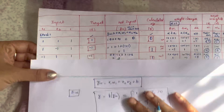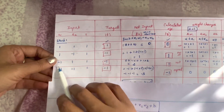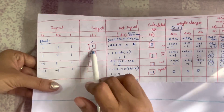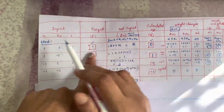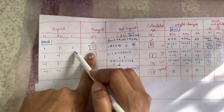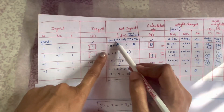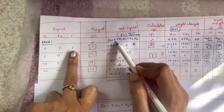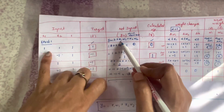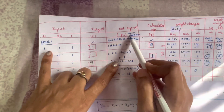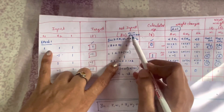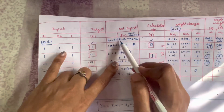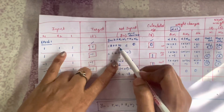Now we solve the problem. We initialize all weights and bias to 0. For the first set of inputs: x1=1, x2=1, bias=1, target=1. The net input y_in = b + x1*w1 + x2*w2 = 0 + 1*0 + 1*0 = 0. Since y_in = 0, the activation function gives y = 0. Comparing y=0 and t=1, they are not equal, so we update the weights.